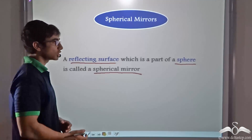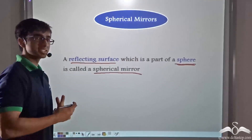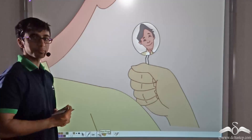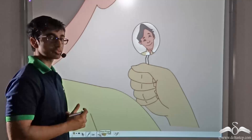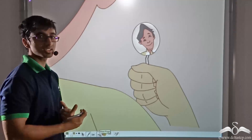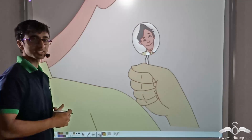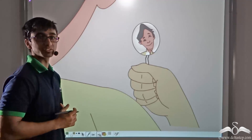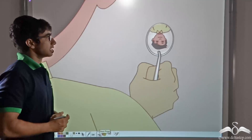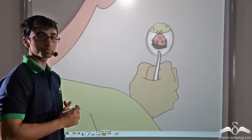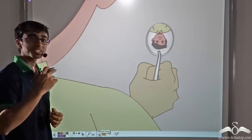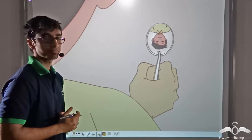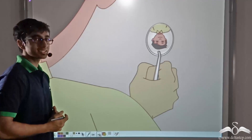Why? Because it was part of a sphere. Now let us consider the same example once again. When the boy held the spoon with the outer surface in front of him, the image that he obtained was upright. This outer surface is a surface which bulges outward — in other words, we can call this surface a convex surface. When the boy held the inner surface of the spoon in front of him, the image obtained was upside down. The inner surface is a hollow or curved inward surface — in other words, we can call this a concave surface.